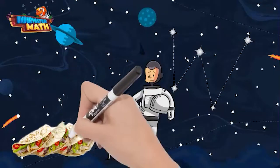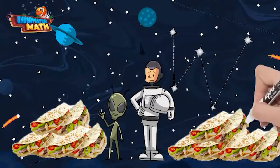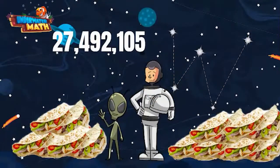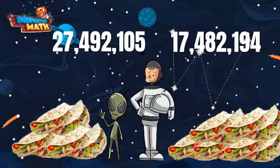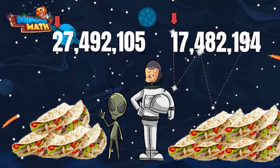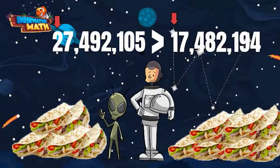Let's try another one. Lenny and I went to eat space tacos. Lenny ate 27,492,105 space tacos and I ate 17,482,194 space tacos. Which way should we face our comparison symbol? Remember to look at the furthest place value to the left. Each number has a digit in the 10 million's place value, but two is greater than one. Lenny ate more tacos, so the comparison symbol should face 27,492,105.